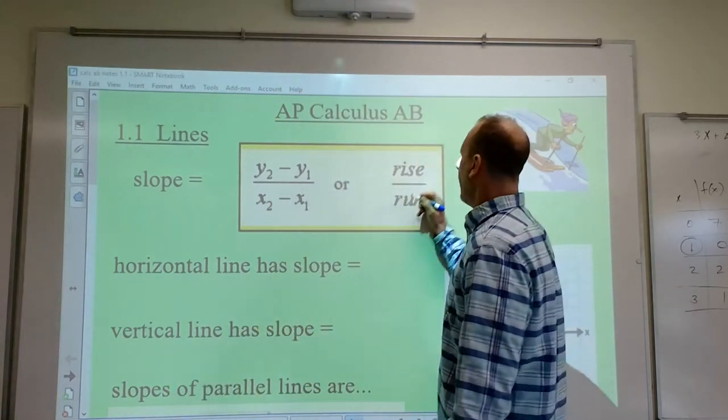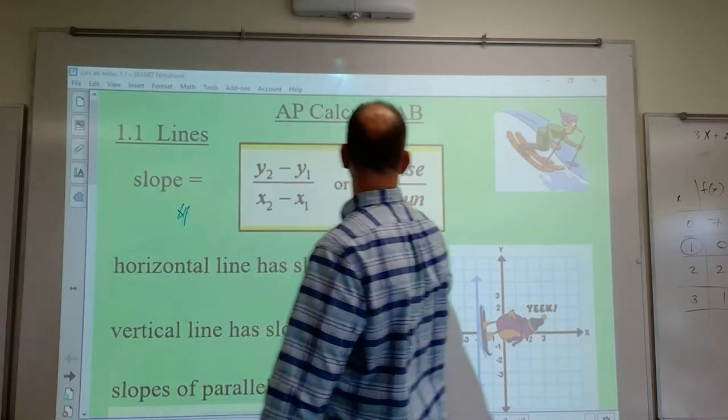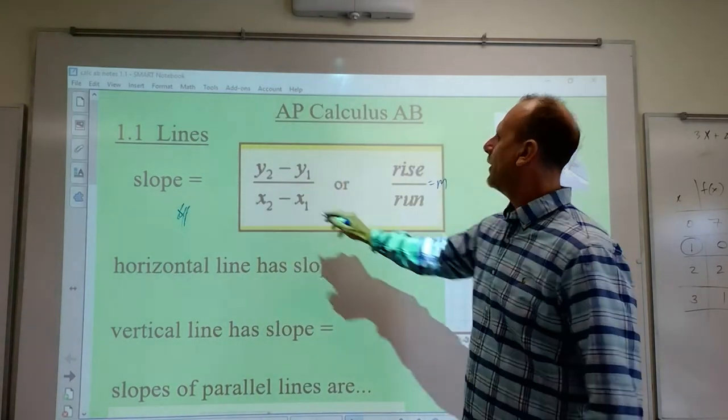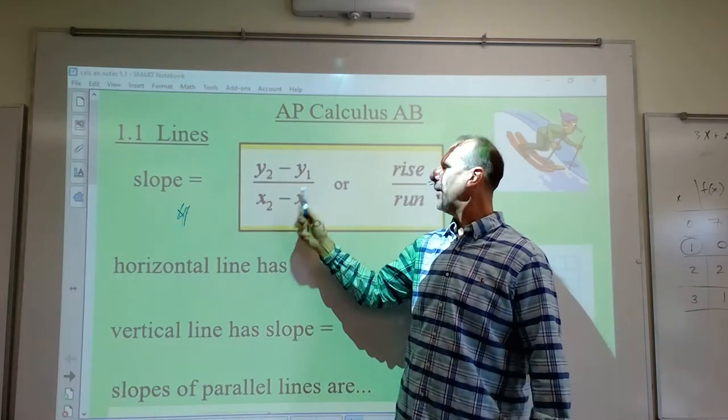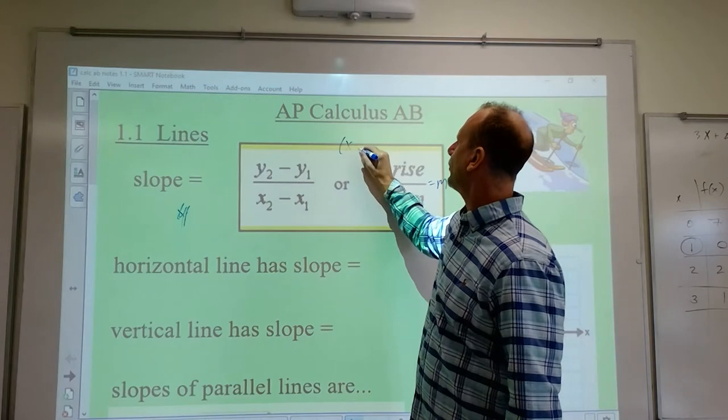Slope. How slope is calculated: M equals Y2 minus Y1 over X2 minus X1. You subtract the Y's over subtract the X's.